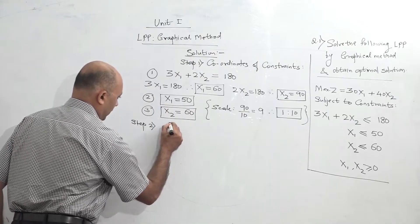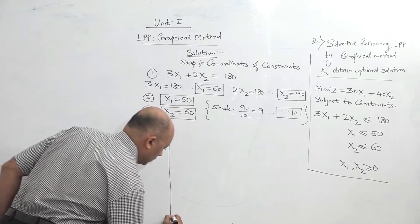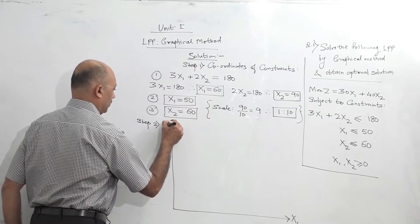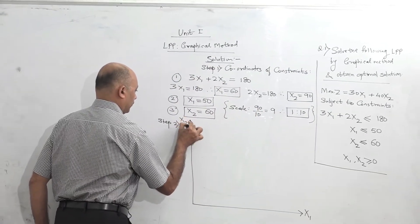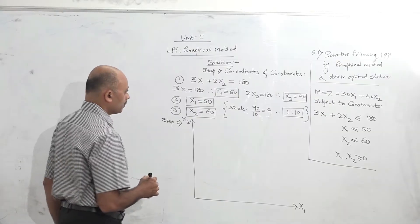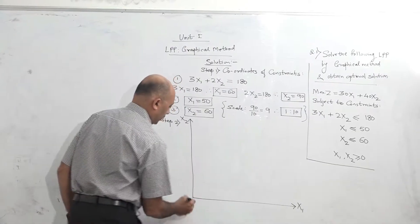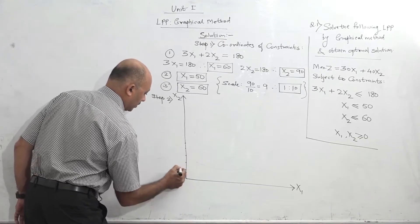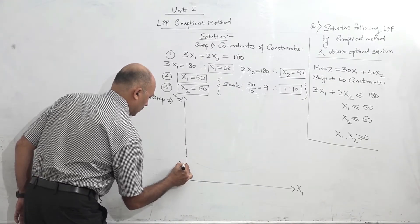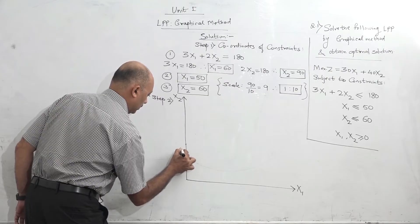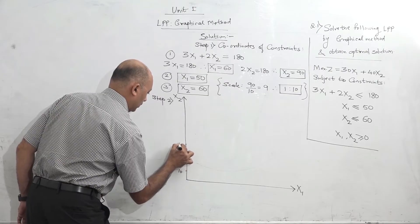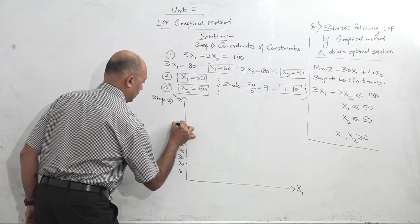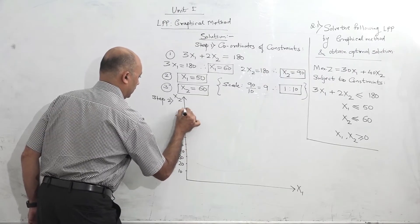Take a graph paper and draw the axes on it — two axes: x1 and x2. Our scale is 1 is to 10, so every centimetre will be 10 units. So mark: 10, 20, 30, 40, 50, 60, 70, 80, 90, 100 on each axis. Our highest value was 90, so we need values up to 90 only on both axes.